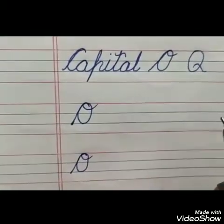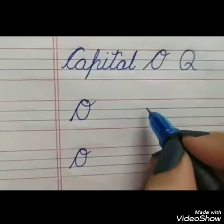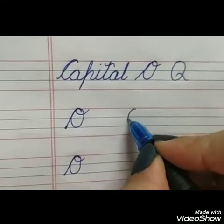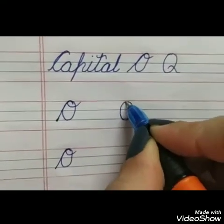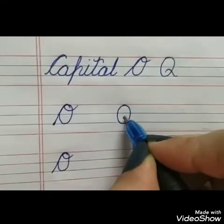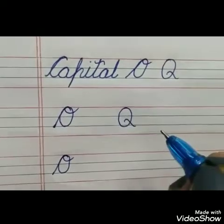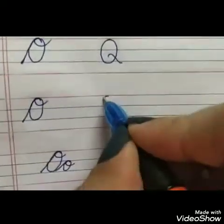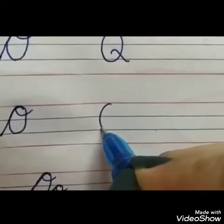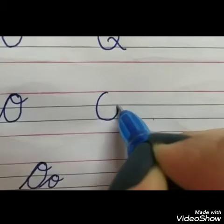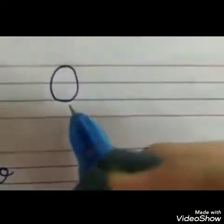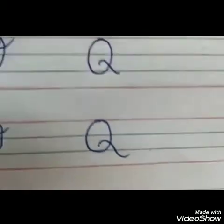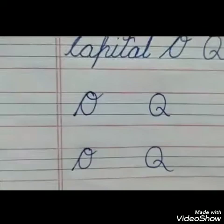Now move to capital Q. You have to make a circle, pick your pencil, and make a slanting pattern like this.